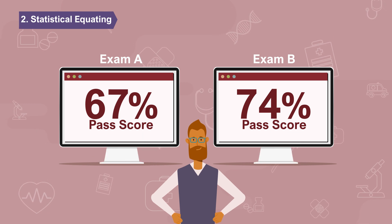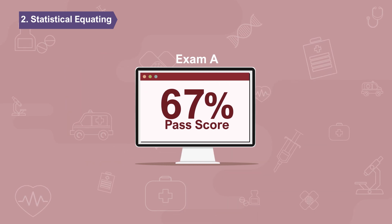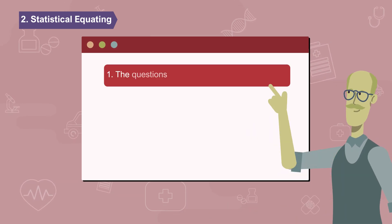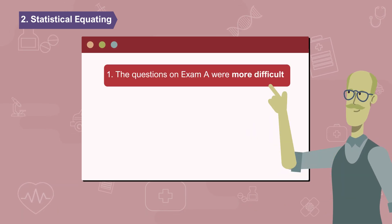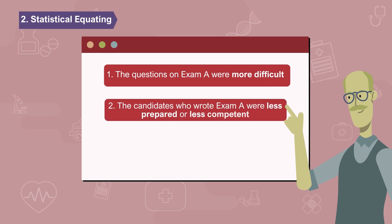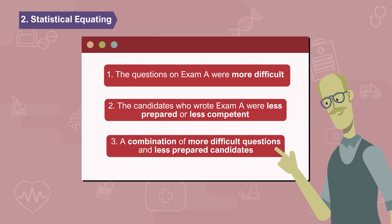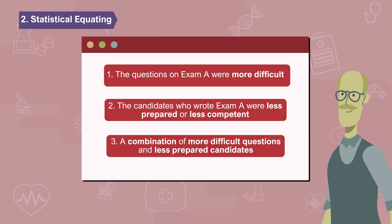If the exam scores were lower on exam A than exam B, it could be for several reasons. One, the questions on exam A were more difficult. Two, the candidates who wrote exam A were less prepared or less competent, or Three, a combination of more difficult questions and less prepared candidates.